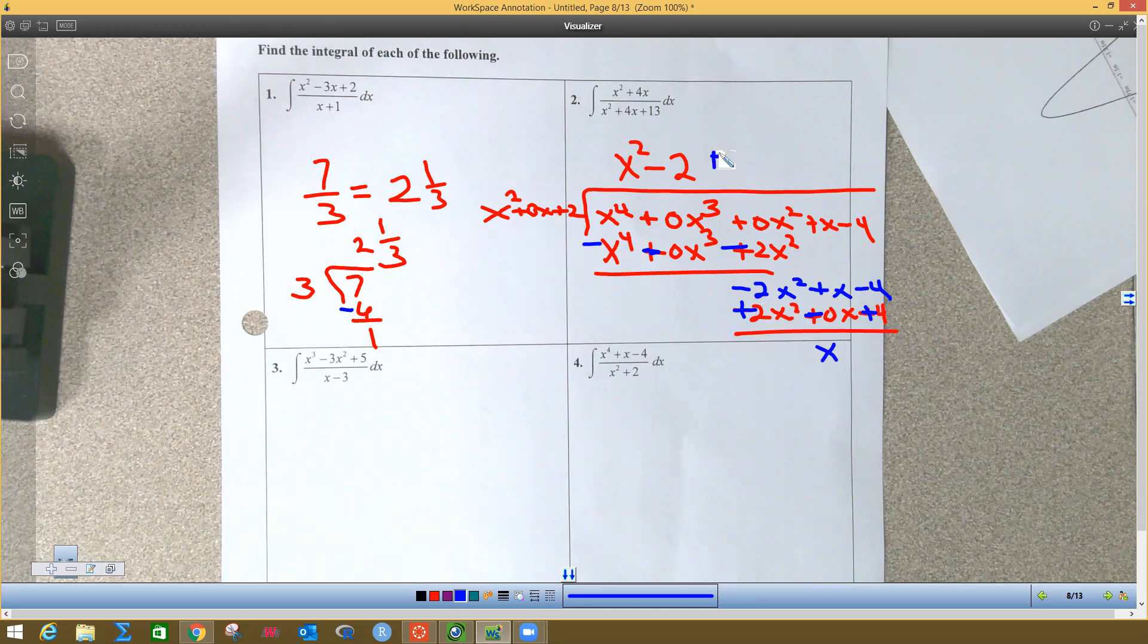I can't divide anymore. So whatever, just like over here this remainder goes on the top and the divisor goes on the bottom. Same story, you put your x on the top and you take your divisor on the bottom.